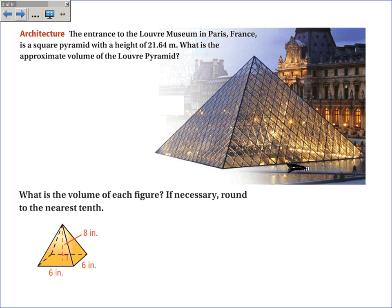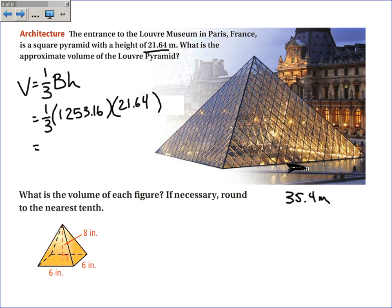A couple of examples. The entrance to the Louvre Museum in Paris, France, is a square pyramid with a height of 21.64 meters. What is the approximate volume of this pyramid? So the volume is one-third the area of the base times the height. The base is a square, and each side is 35.4 meters. So I take 35.4 times 35.4, and I get 1,253.16 times the height, which is 21.64. And I get a volume of 9,039.46 cubic meters.